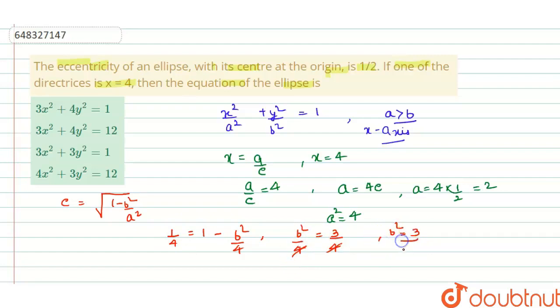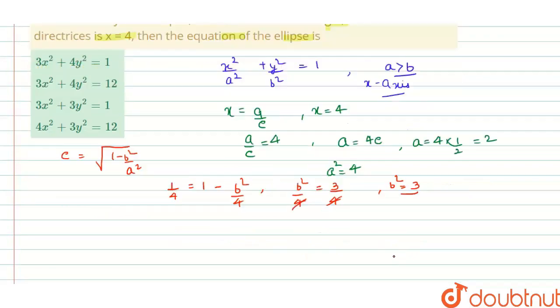Now writing the general equation of the ellipse from the above, it will be x square upon a square that is four, plus y square upon b square that is three, equals one. Taking LCM, it will be three x square plus four y square equals three into four, twelve.